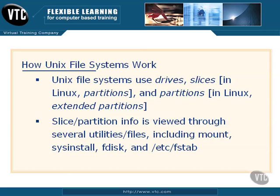A Unix file system, such as the BSD file system we're using, uses the notation of drives — which are the physical hard drives — and within those drives you have four slices. These slices, if you were talking in terms of Linux, are also called partitions. So slices and partitions are the same thing. You have the drive, and it's divided up into four partitions or four slices.